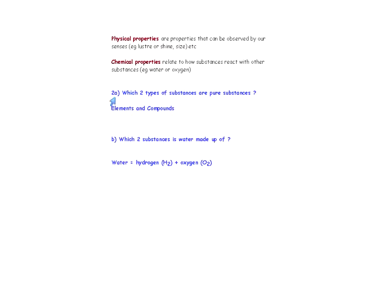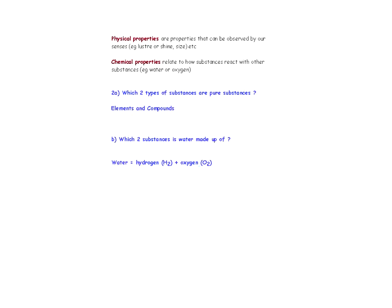Review question 2A: which two types of substances are pure substances? Elements and compounds. Question B: which two substances is water made up of? Water is made up of hydrogen and oxygen. We'll see later that we can separate water into those two substances using electricity.